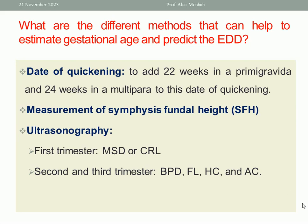Plus or minus 2 centimeters should be considered. What else for detection of gestational age and expected date of delivery? Use of ultrasonography. During the first trimester, we can depend on mean sac diameter or crown-rump length. During the second and third trimester, we can depend on measurement of biparietal diameter, femoral length, head circumference, and abdominal circumference. This is how to estimate gestational age and the expected date of delivery.